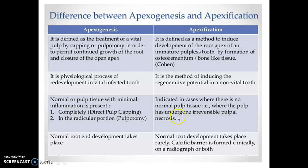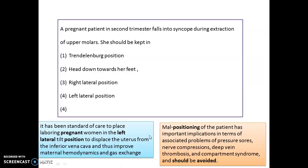If a pregnant lady in her second trimester undergoes syncope, you will keep her in the left lateral position. This displaces the uterus from the inferior vena cava and improves maternal hemodynamics and gas exchange. Remember, the left lateral position is contraindicated in some conditions like pressure sores, nerve compression, deep vein thrombosis, and compartment syndrome.